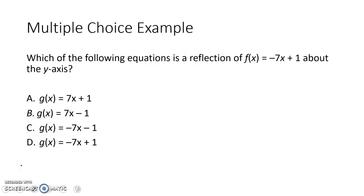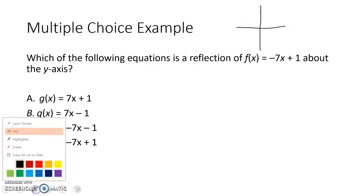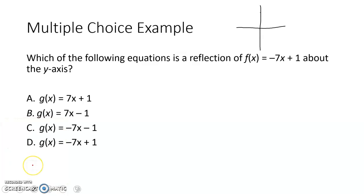So I'm going to first begin with just an estimate of what the graph would look like. All right, so negative 7x plus 1, that is a line. It would look something like this.